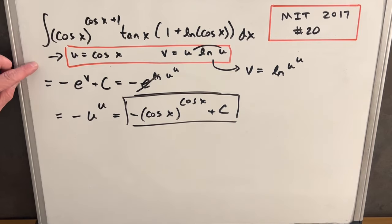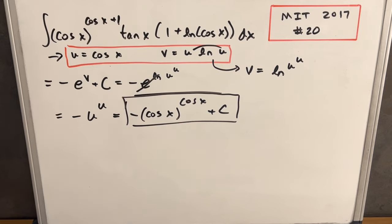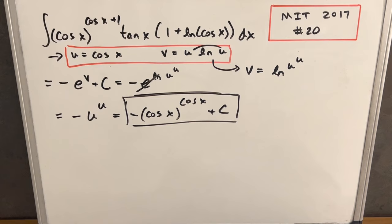In theory you could combine these two substitutions into just one, and that would work fine — it might just be a little harder to see. Anyway, that was MIT Integration Bee 2017, Problem 20, the last one on this exam. Thank you for watching, please like and subscribe, have a good day.